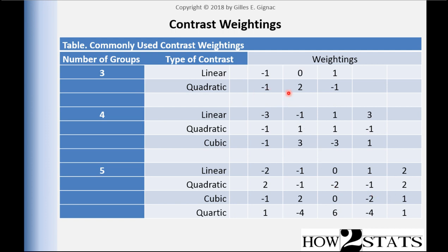Here's a quadratic function you could consider testing, and this will become clearer as you follow the examples in subsequent videos. For a quadratic contrast with three means representing an inverted U-shape, the weightings start low at negative one, go up to two, and come back down to negative one — that's one bend in the means. If instead you hypothesize a U-shaped function, you would specify plus one, negative two, and plus one, which reflects that pattern in the means.